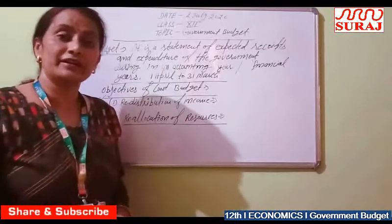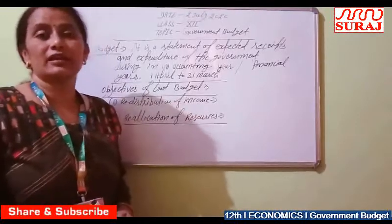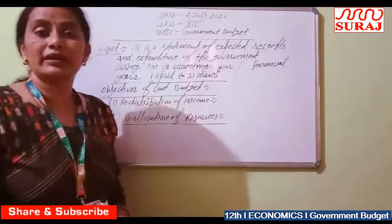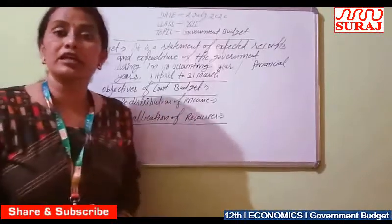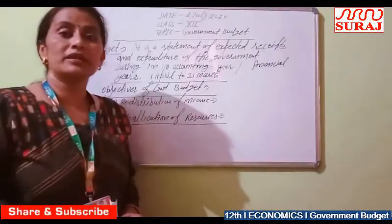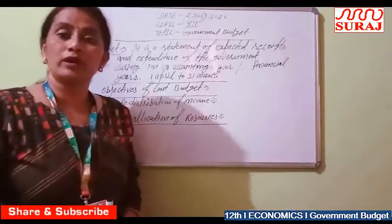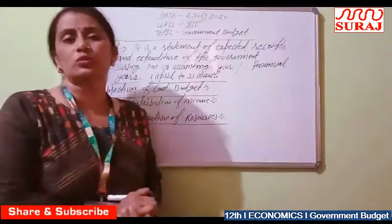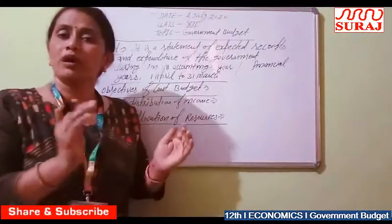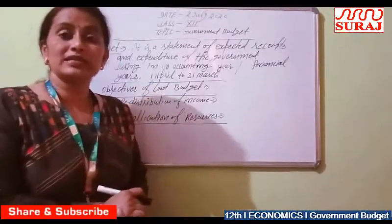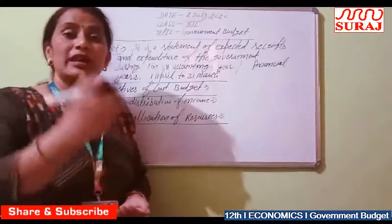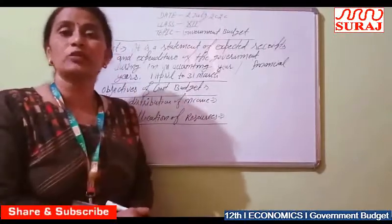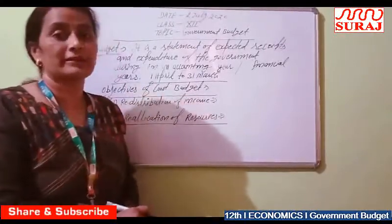In our country, the national income is distributed among different people, but these are unequal. It means the richer become more richer and the poor become more poor. In our country, the distribution of income is quite unequal, which means the rich become richer and the poor become poorer.